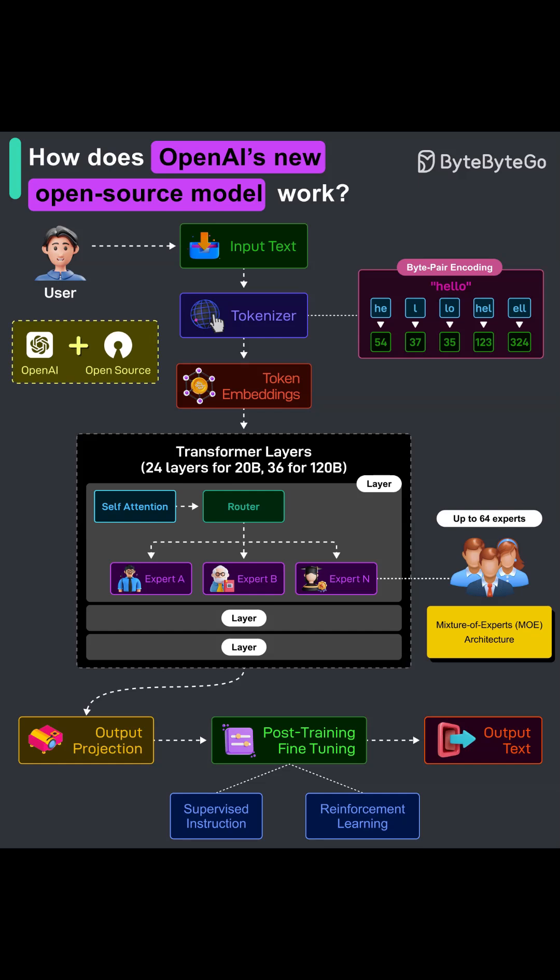After the final layer, the internal vectors are projected back into token probabilities. The model picks the most likely next token — optionally with sampling for creativity — and repeats this step to generate fluent text, code, or answers.